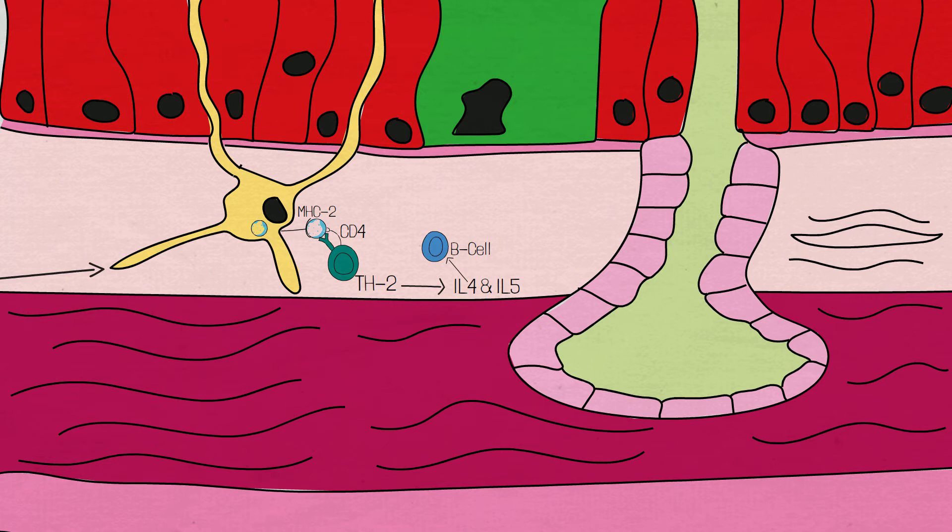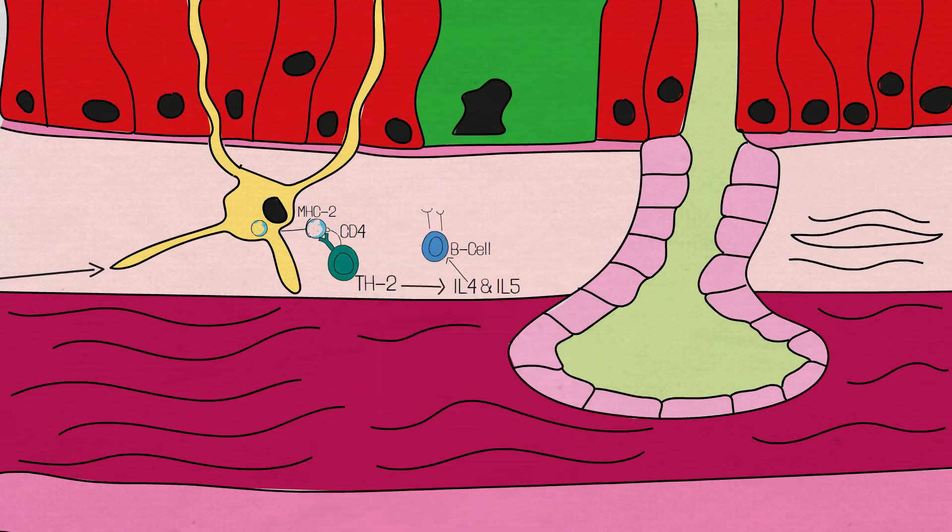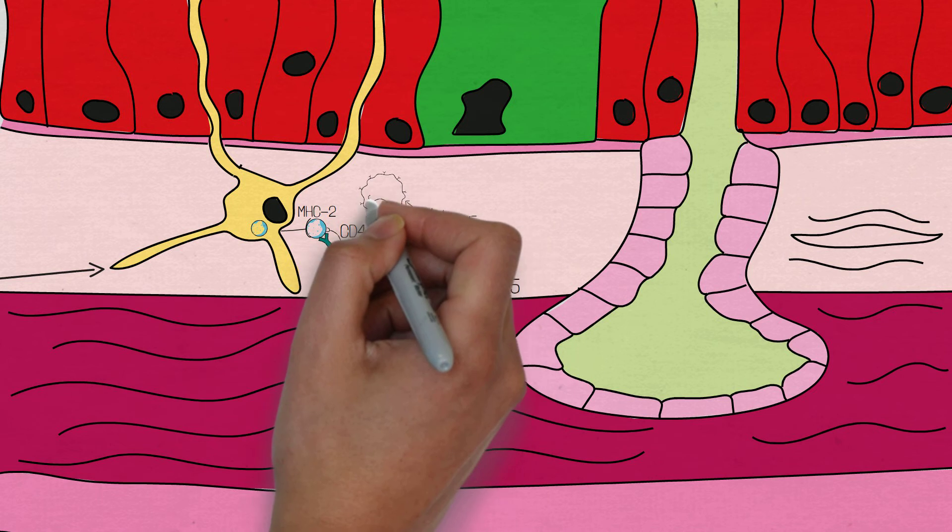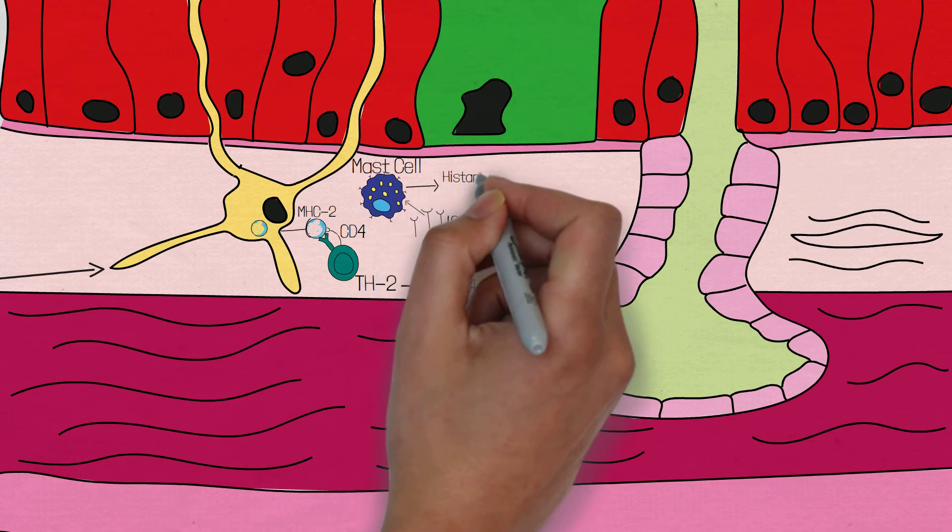These plasma cells can now start to synthesize and release immunoglobulins, which are specific to the antigen that they first encountered. These immunoglobulins are immunoglobulin E antibodies, and embed on the cell surface of mast cells. The IgE antibody can now react to the allergen if it is encountered again, stimulating the mast cell to undergo degranulation, which is a term used to describe the release of inflammatory chemicals from within the mast cell. Important chemicals released are histamines and leukotrienes.